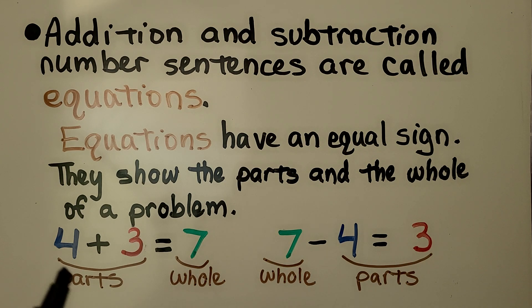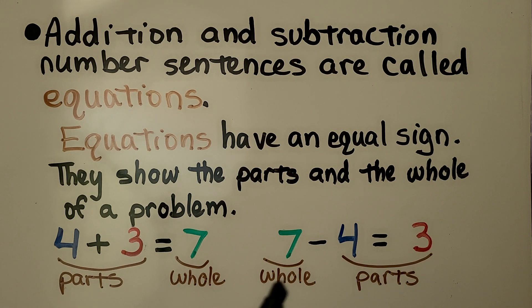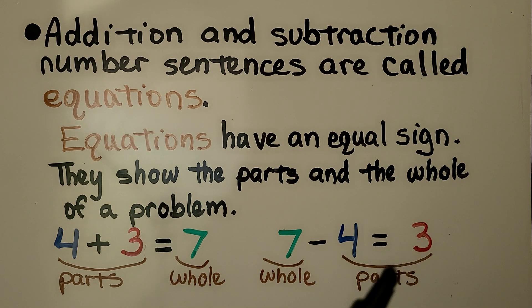For addition, the addends would be the parts, and the sum would be the whole. For subtraction, the minuend would be the whole, and the subtrahend and difference would be the parts.